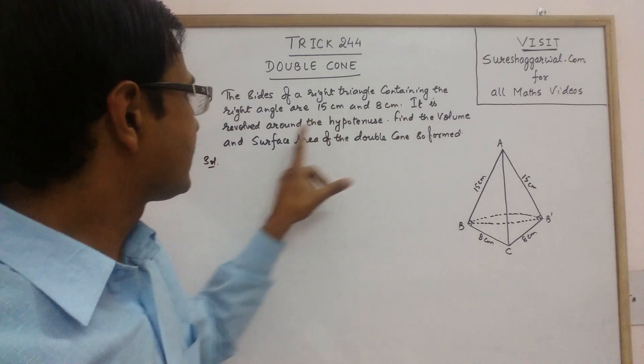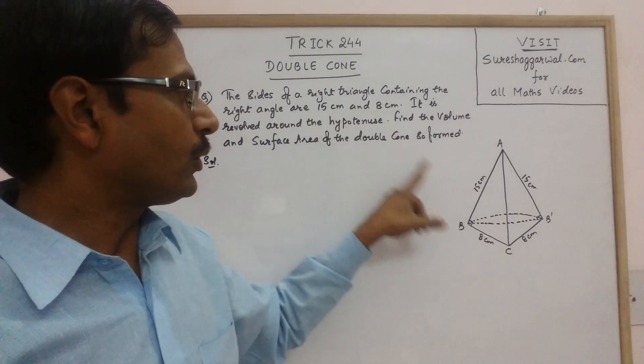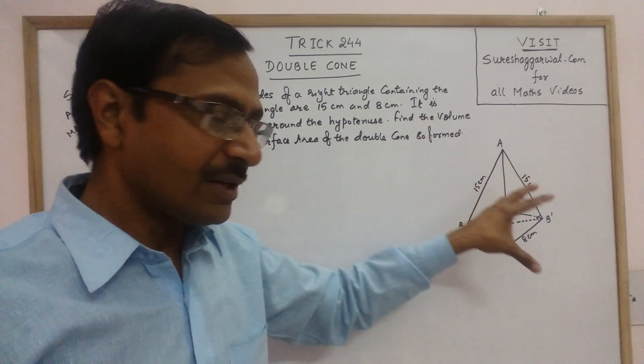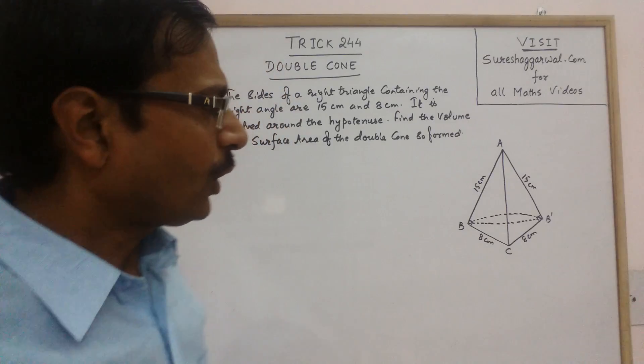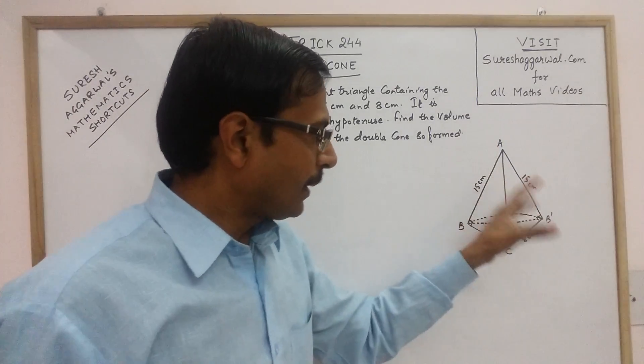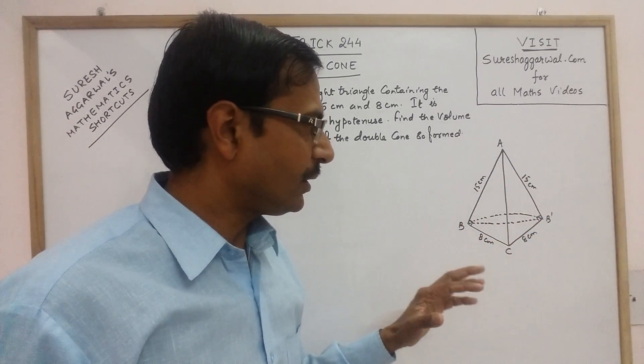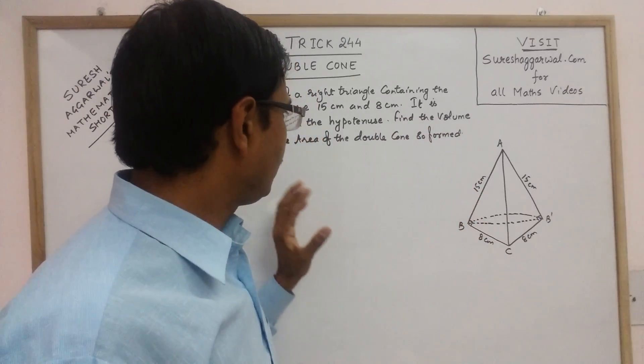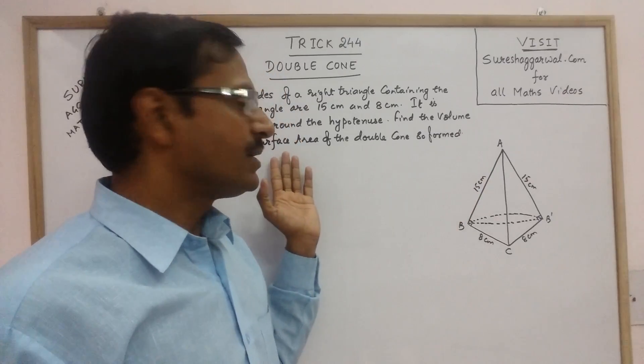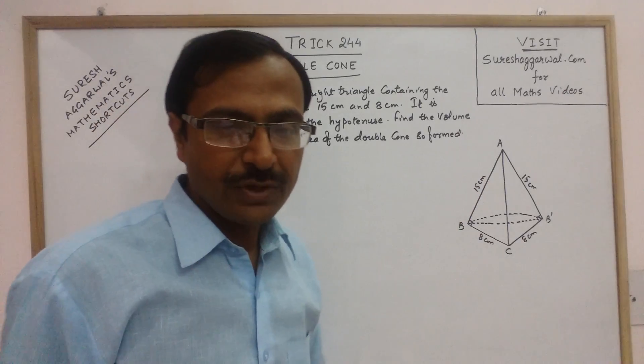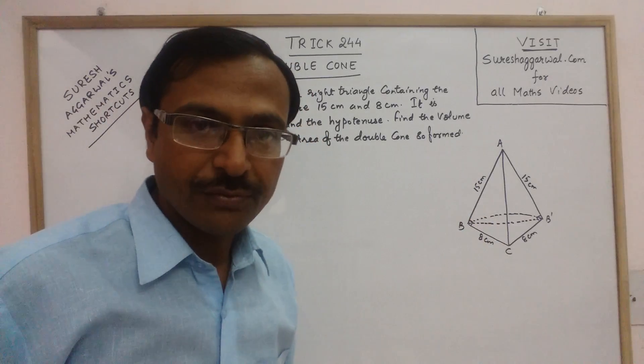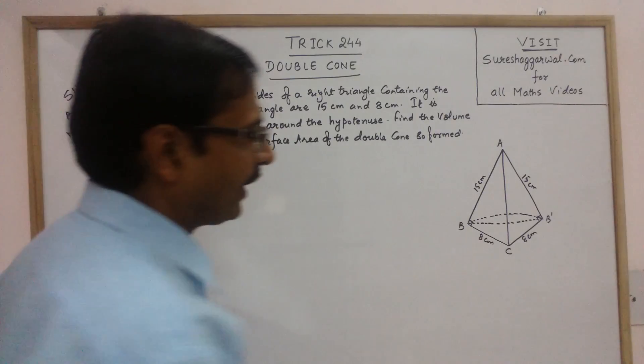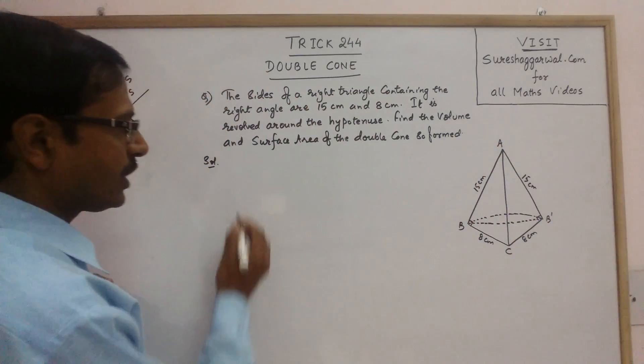So now, if you look at this very carefully, then you will see one cone whose vertex is A. This is one cone and one cone with vertex C. So when we rotate a right angle triangle about the hypotenuse, then a double cone like this is formed. So, in this problem, it is given that it is revolved around the hypotenuse and we have to find the volume and surface area of this double cone which is formed. Now, obviously, in a cone, you need the radius and the height to find the volume and you need the slant height to find the surface area. So, we need to know the dimensions of this double cone first.